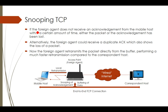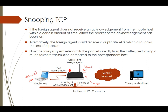If the foreign agent does not receive an acknowledgement from the mobile host — suppose a message has been sent from the correspondent host, stored at the access point, and delivered to the mobile host — the foreign agent starts a timer. Just as TCP uses a timeout period, a timer also exists at the access point. If the message is not delivered and is lost in the transition between the access point and the mobile host, within a certain time the FA assumes either the packet was lost or the acknowledgement was lost.